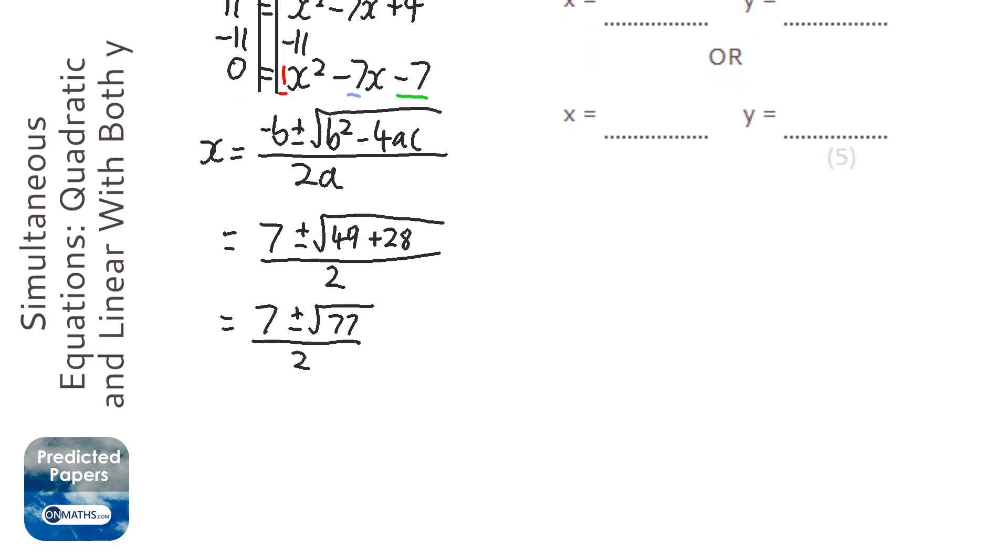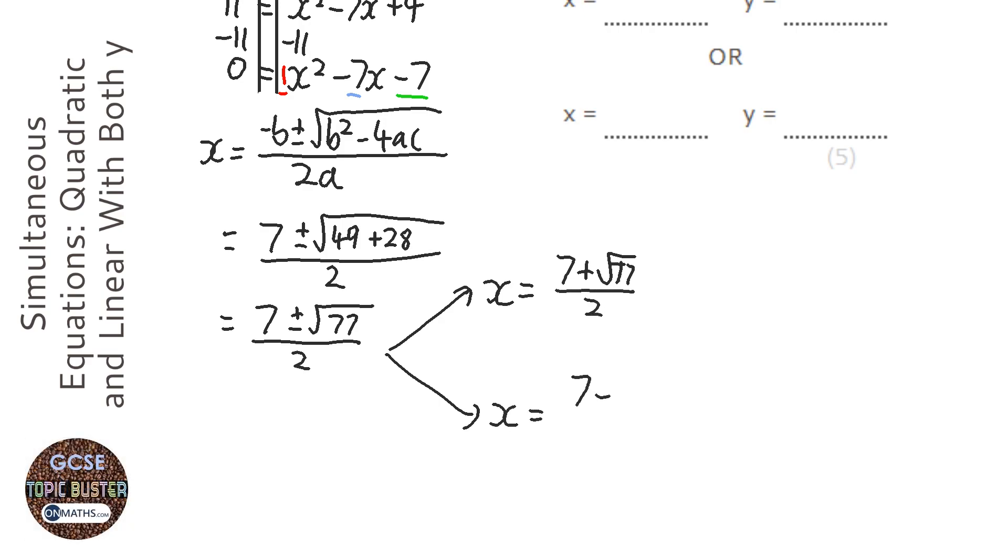OK, this is where we split the two apart. We have the positive version, so 7 plus root 77 over 2. And we have the negative part, 7 minus root 77 over 2. So the positive part, 7 plus root 77 over 2, is going to give us the answer 7.89 to two decimal places.